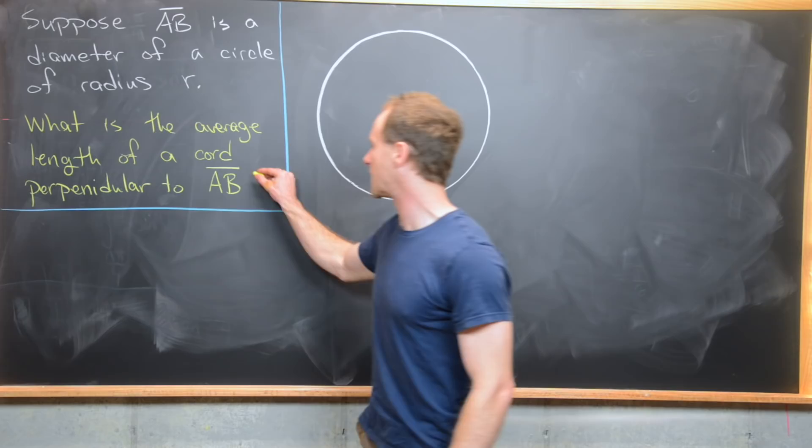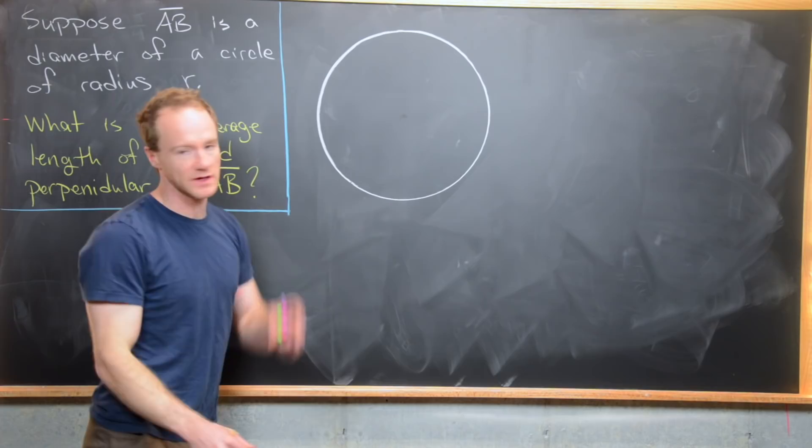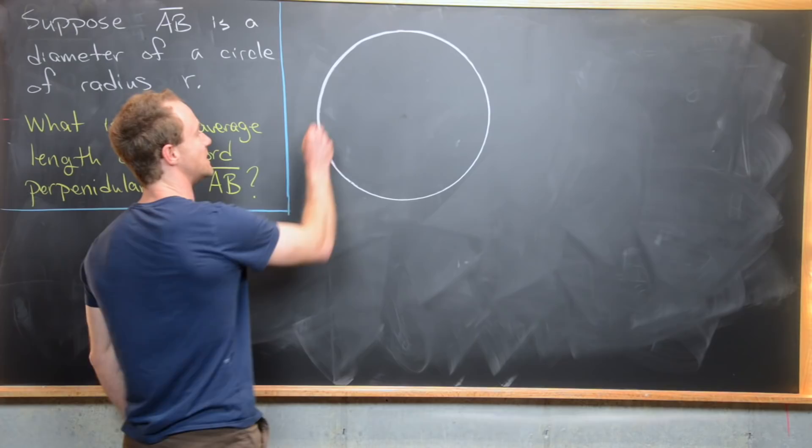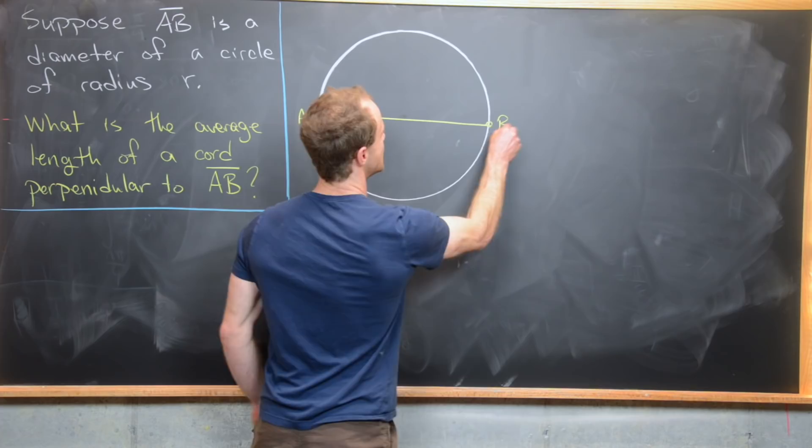So I've already drawn a circle here just so that we can make a nice picture. Let's go ahead and put this diameter AB on the circle. So I'll put my point A here and then I'll put my point B here. And then let's go ahead and call this point in the middle O for the origin.